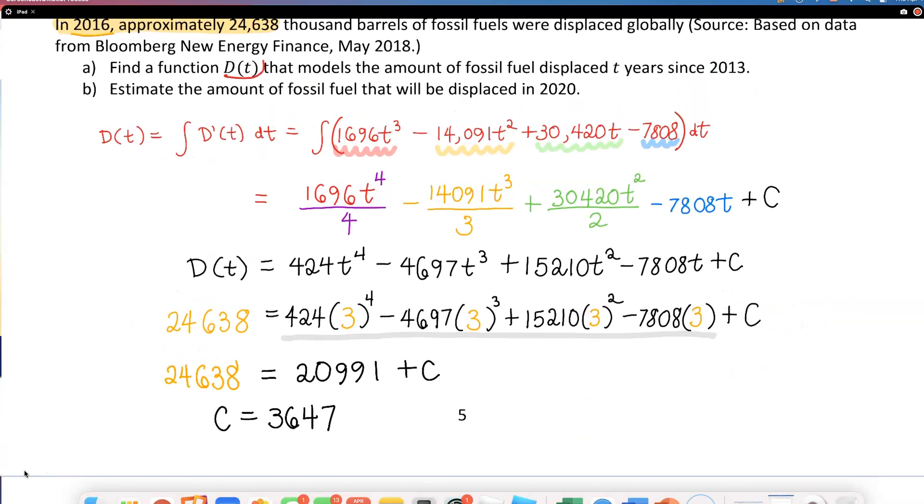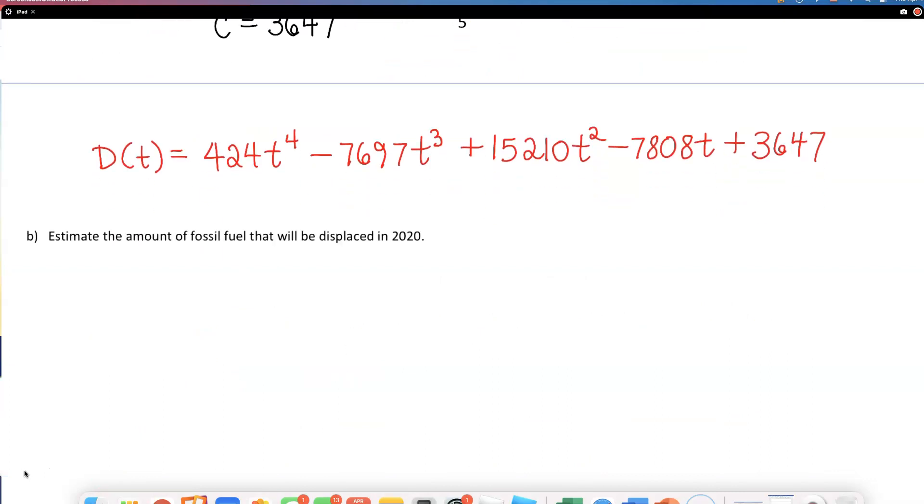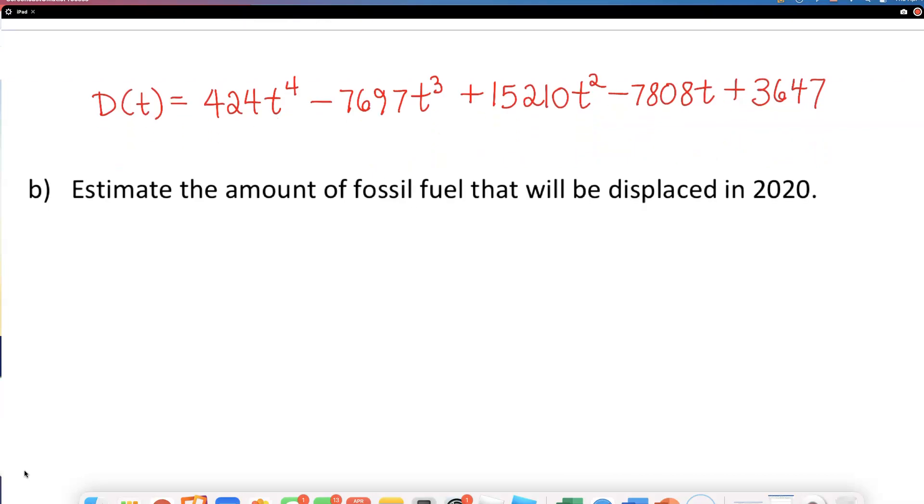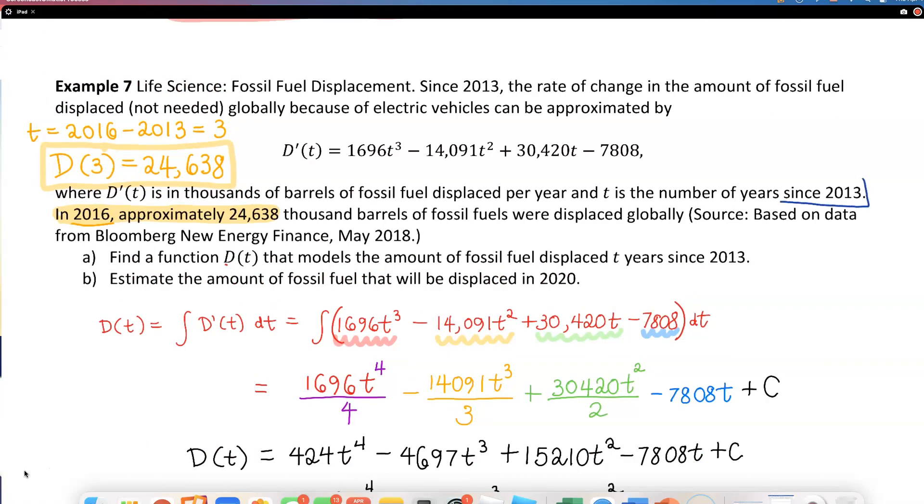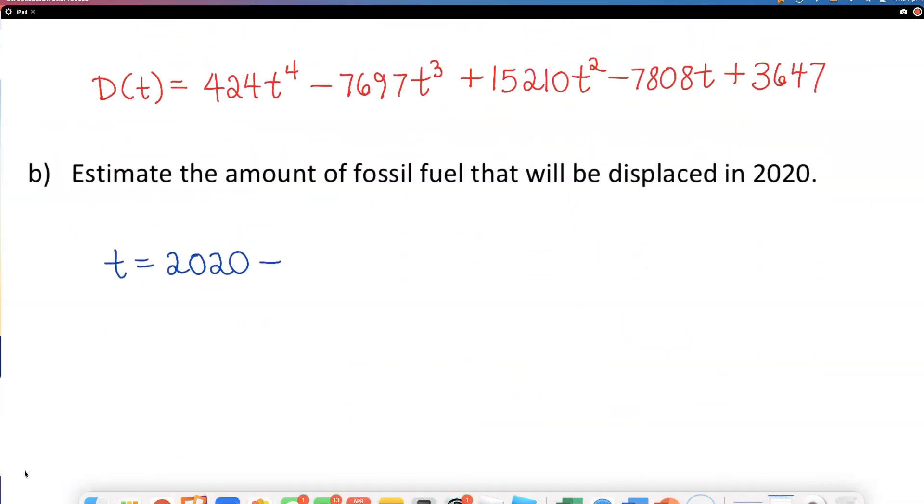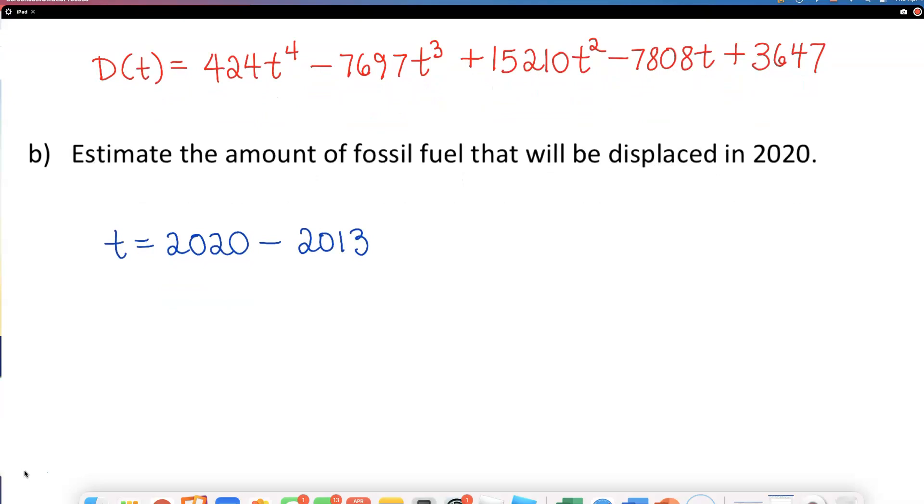Part B asks: estimate the amount of fuel that will be displaced in 2020. T is how many years since 2013, so I'm going to subtract 2013 from 2020, which is 7. What we're going to do is simply plug in 7 into our D(t) that we found above.